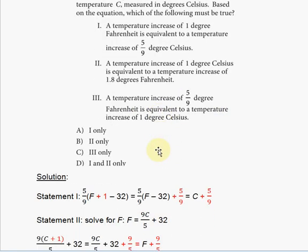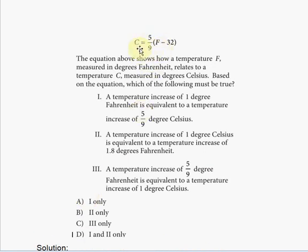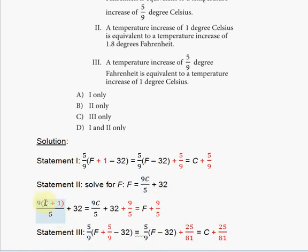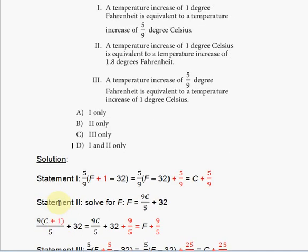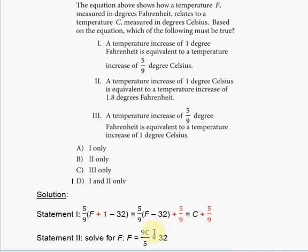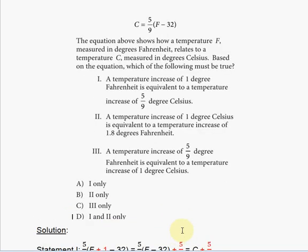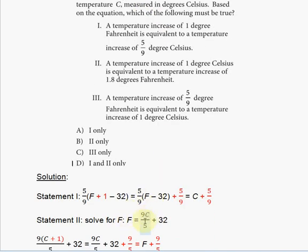To rewrite the equation, multiply both sides by nine to get 9C = 5(F − 32), then divide by five and add 32 to both sides to isolate F. The result is F = (9C/5) + 32. Now we have F expressed in terms of C and we're ready to check statement two.